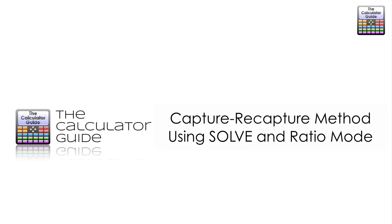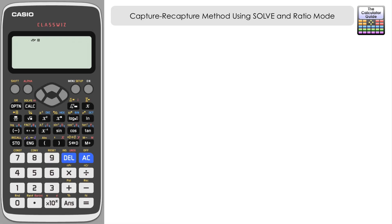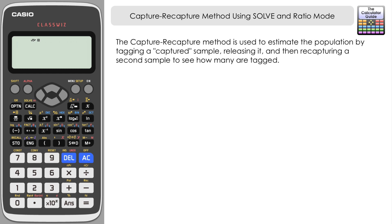Hello and welcome to the Calculator Guide video on the capture-recapture method using SOLVE and ratio mode. The capture-recapture method is used to estimate the population by tagging a captured sample, releasing it, and then recapturing a second sample to see how many are tagged.